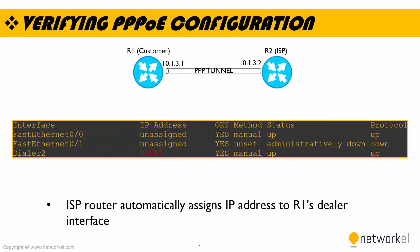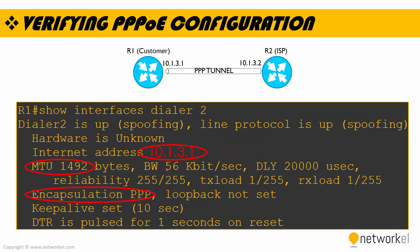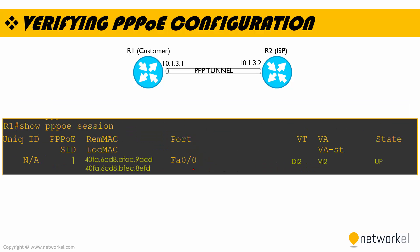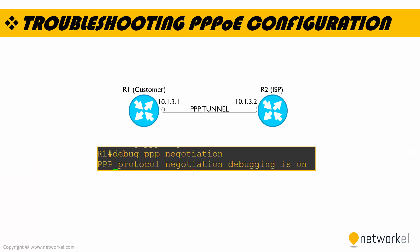To verify the PPPoE configuration, we can use the 'show ip interface brief' command and check if the ISP router automatically assigns an IP address to the dialer interface. Another verification point is 'show interfaces dialer 2' — if we can see that we received an IP from the ISP, that means everything is working properly. We can also use the 'show pppoe session' command and 'debug ppp negotiation' command for troubleshooting.